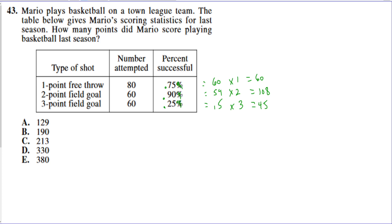The total is 213, choice letter C — that is the total number of points Mario scored in the previous season.